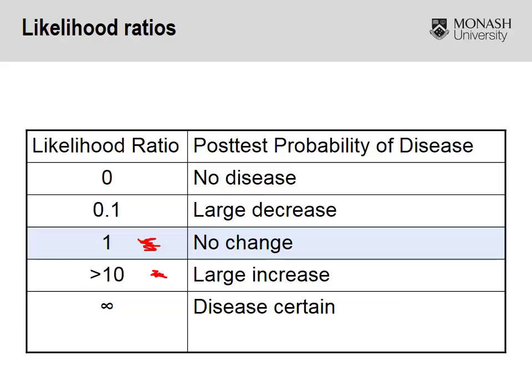For negative likelihood ratios, if a person tests negative, the closer the negative likelihood ratio is to zero, the better it is at ruling out the disease or condition. So three key takeaways from this slide: if your likelihood ratio is one or close to one, there's no real benefit in using it; any likelihood ratio approaching 10 or above is great at ruling in the condition; and any likelihood ratio approaching zero — say 0.001 or 0.005 — the closer it is to zero, the better it is at ruling out the condition.